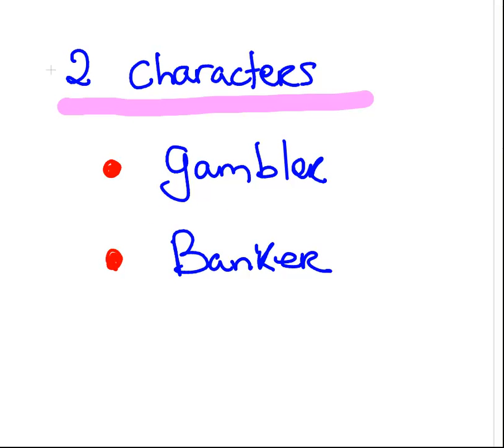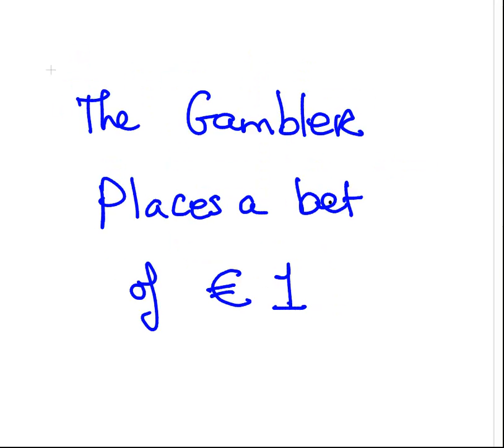What we have here in this scenario is two characters, the gambler and the banker. We're always going to look from the point of view of the gambler. The gambler is sitting at a table placing bets with the banker, and will either win or lose one unit of wealth, let's say one euro or a dollar or a pound.